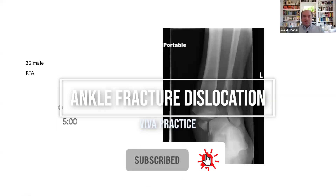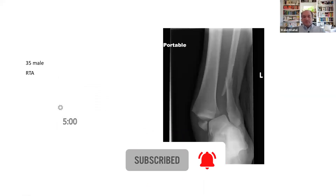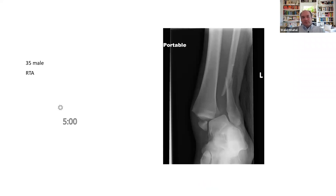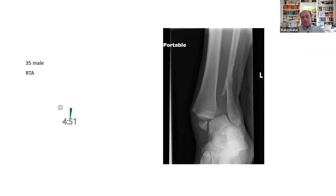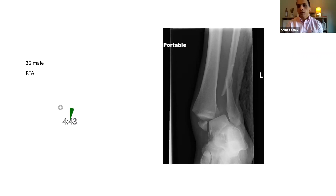We have Ahmad for another lower limb viva session. A 35-year-old male presented to A&E with the injury shown on the radiograph. He has been treated with ATLS guidelines and this is an isolated injury. How would you manage this?